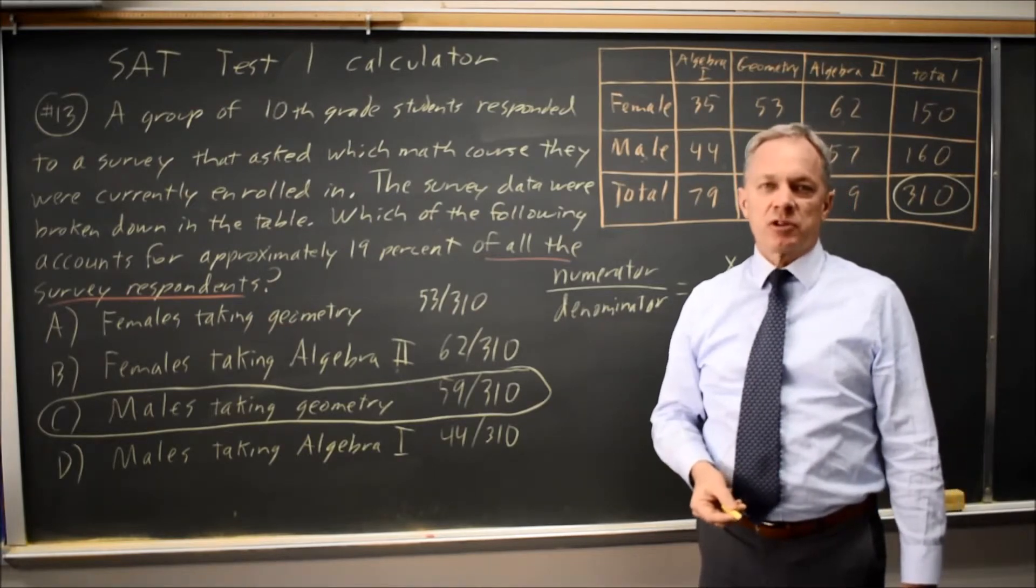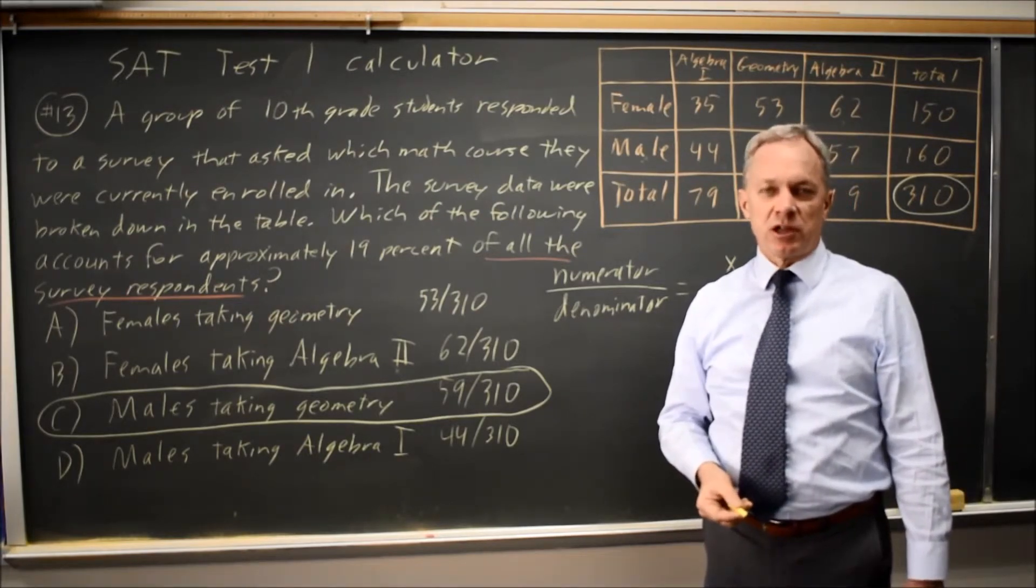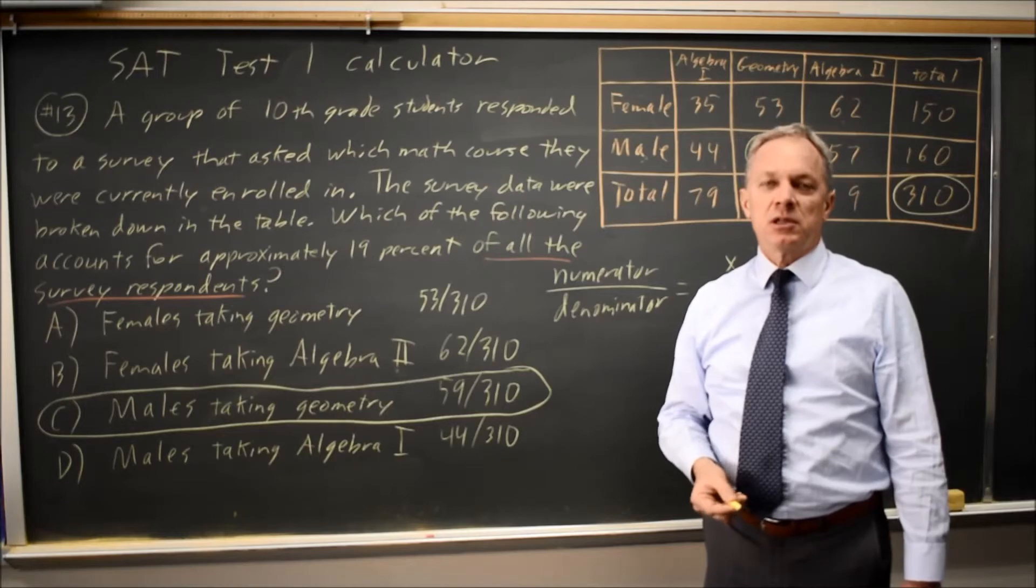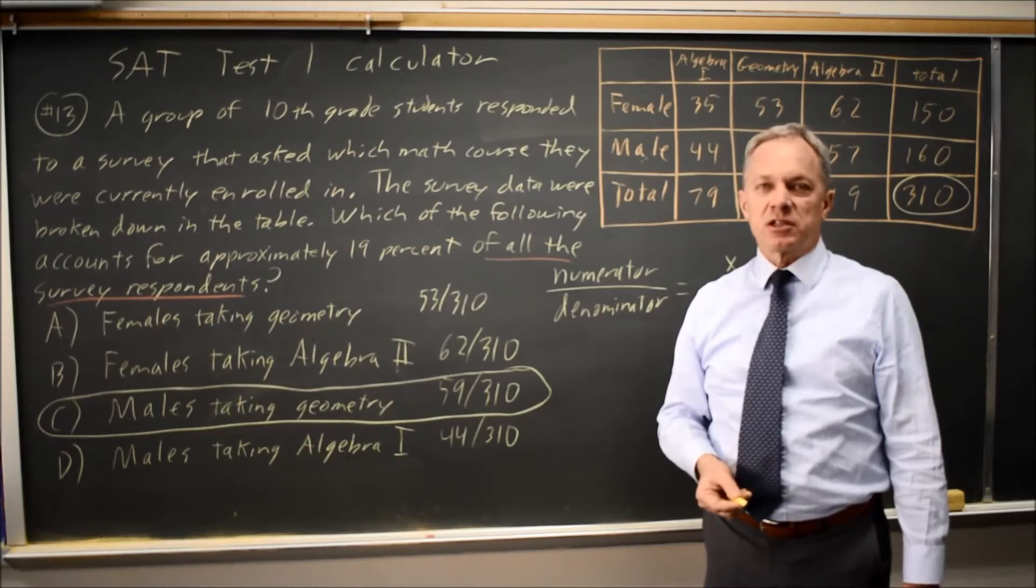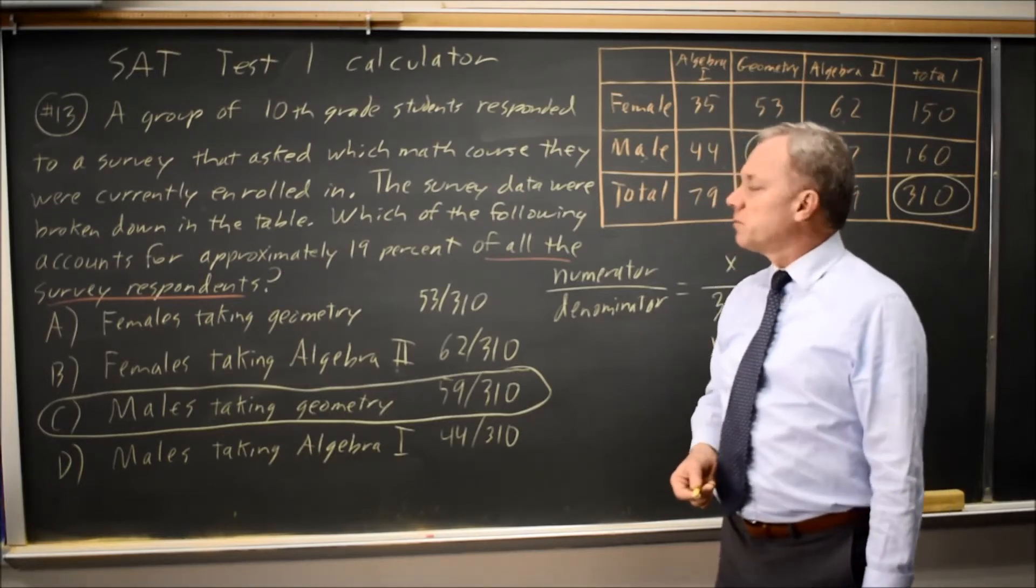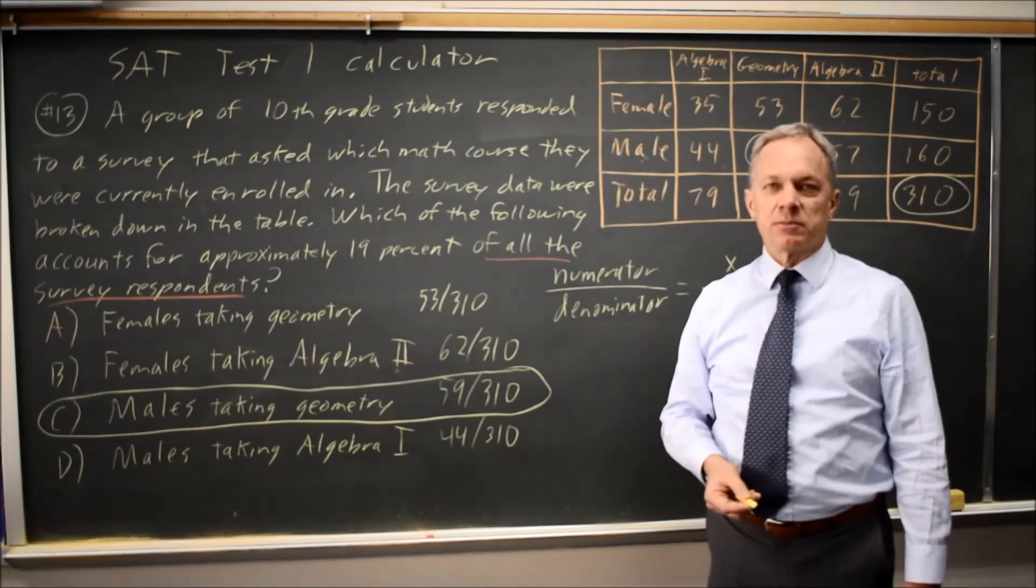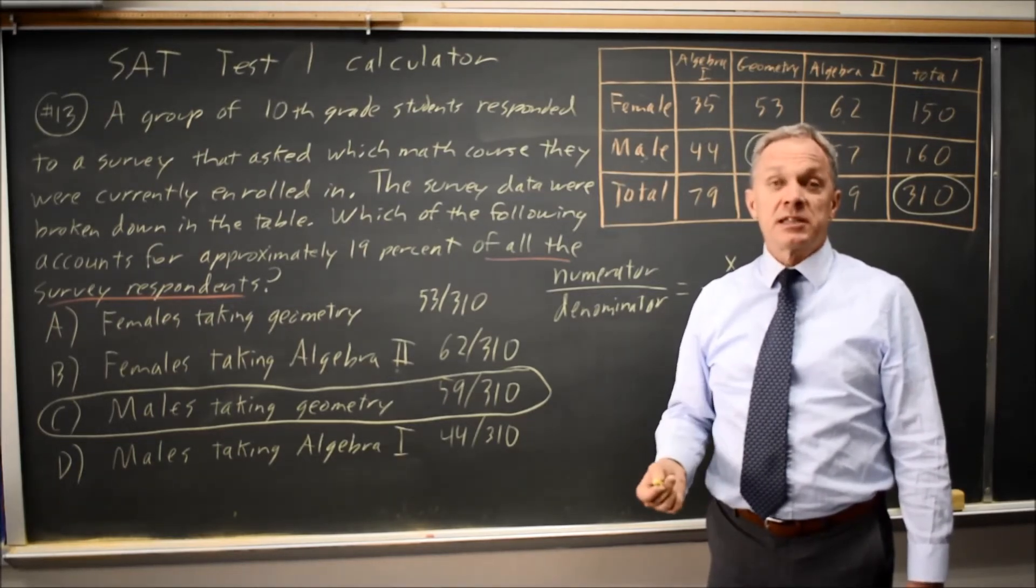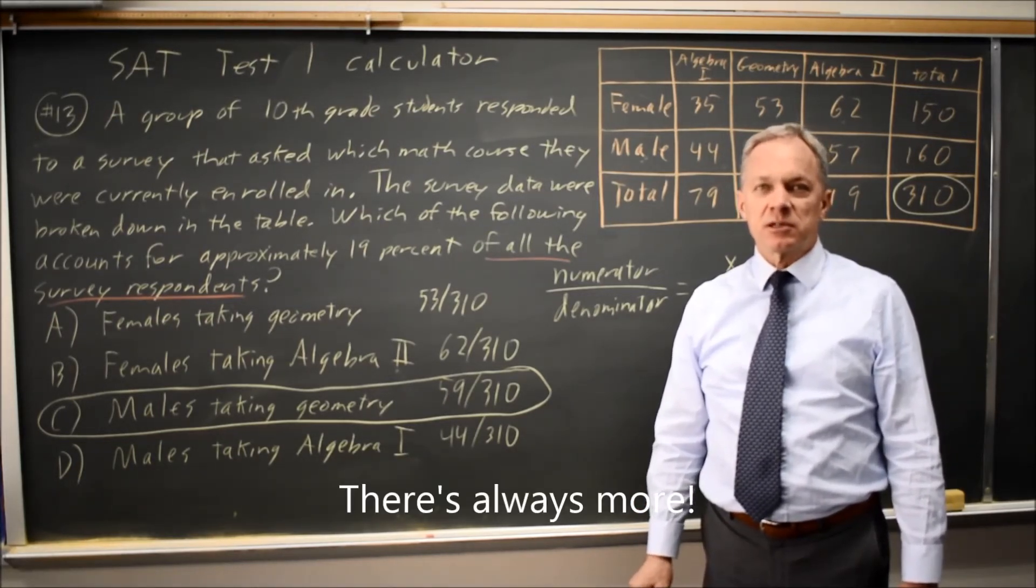And then for those rows, or for those columns, or for the entire table, your numerator is the individuals that they're asking about the probability of choosing someone from that group. Come back soon for my next SAT math video. With math, there's always more.